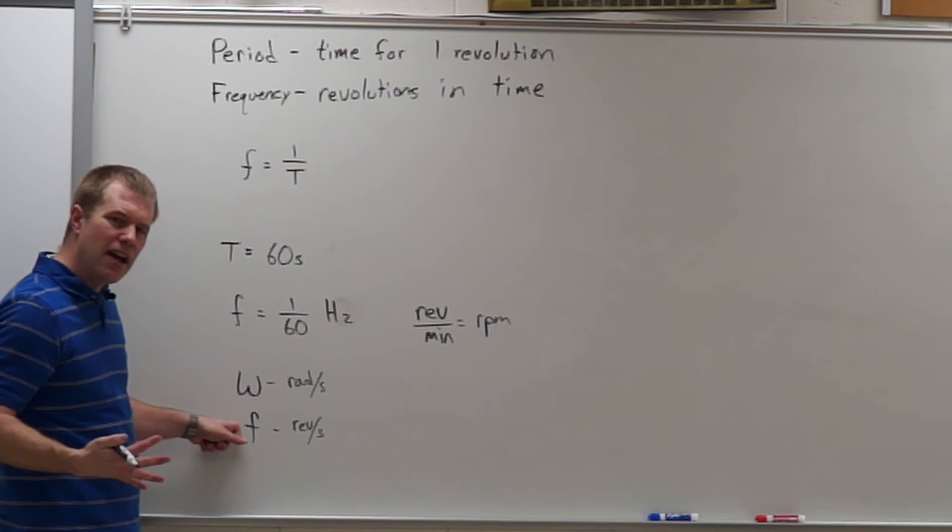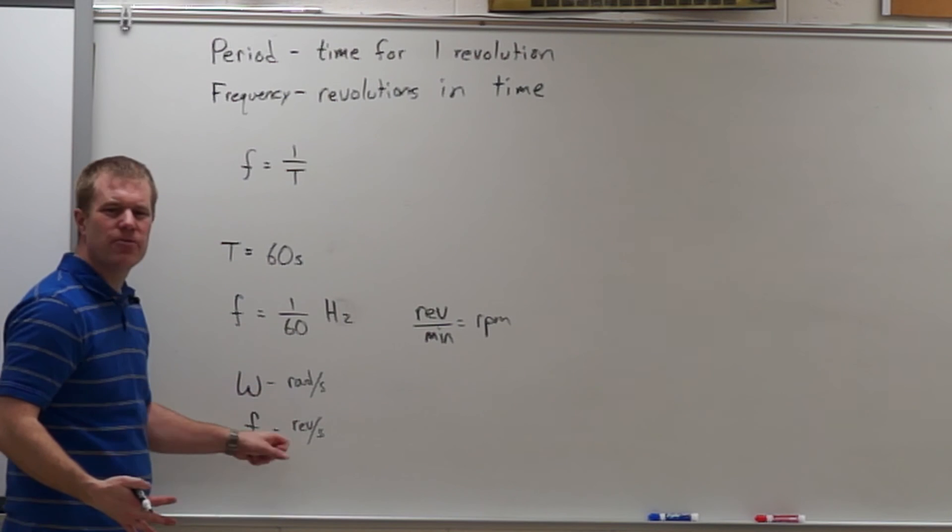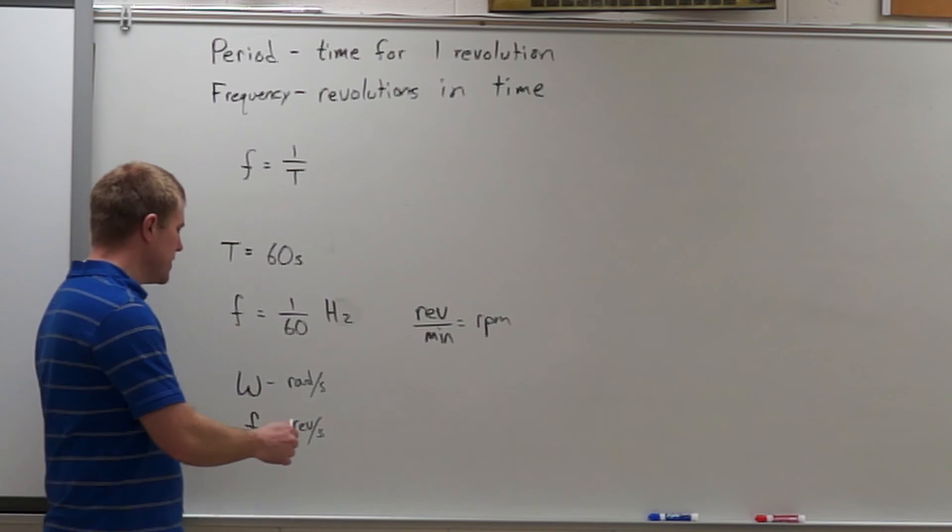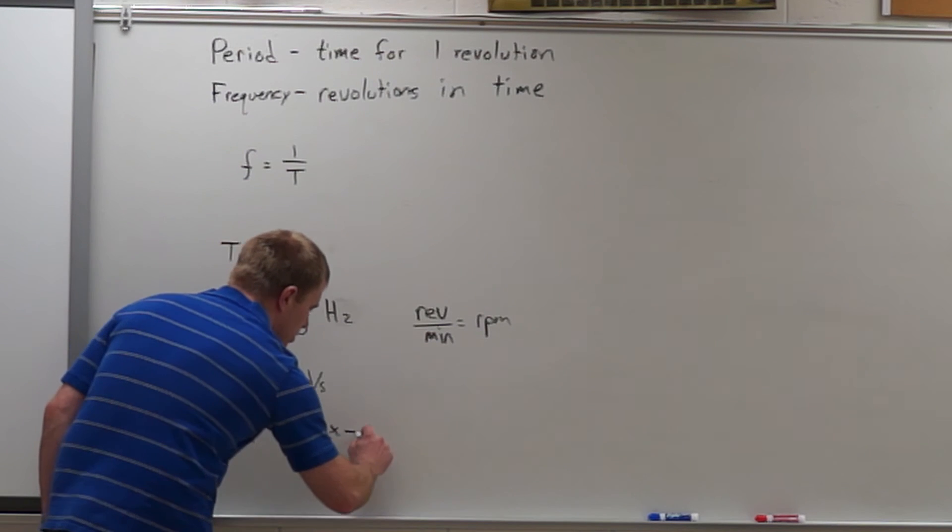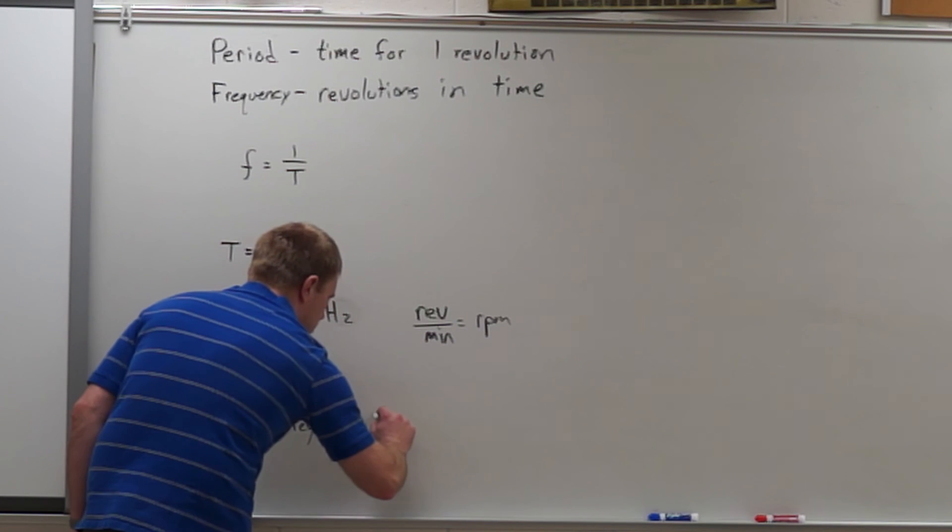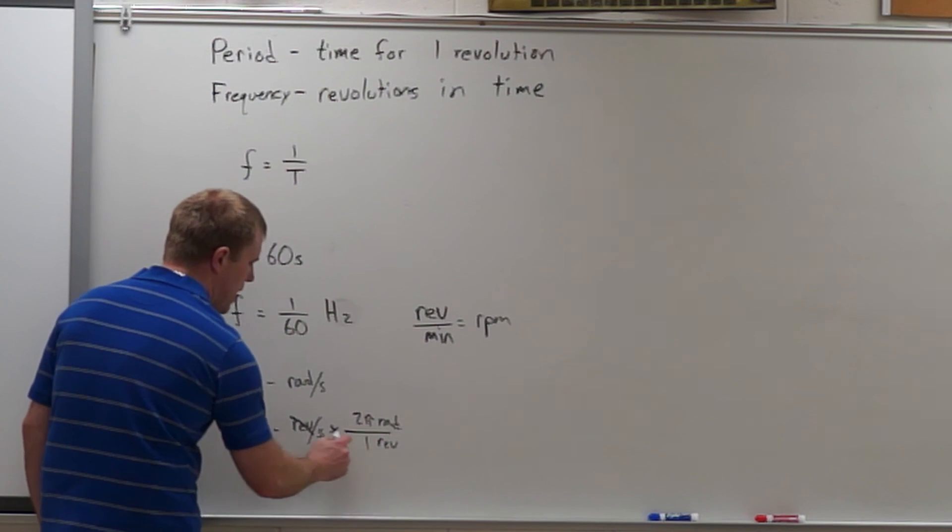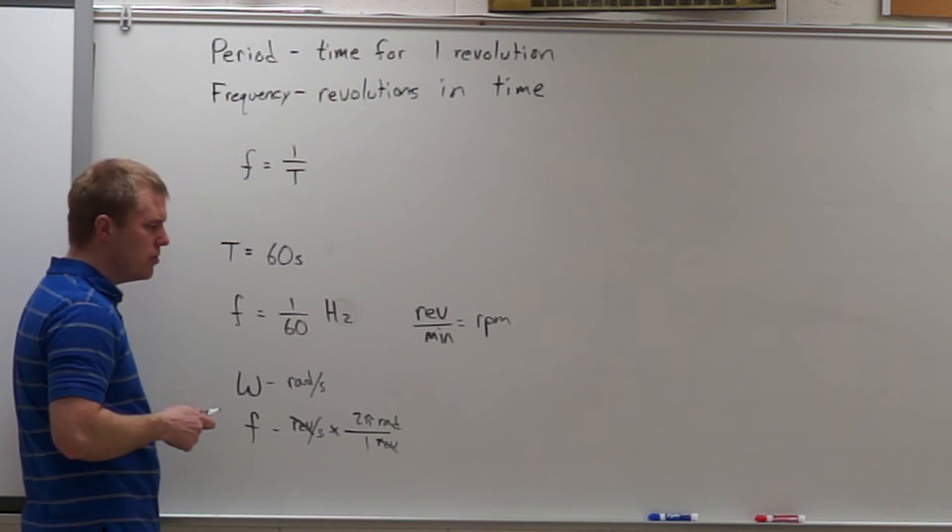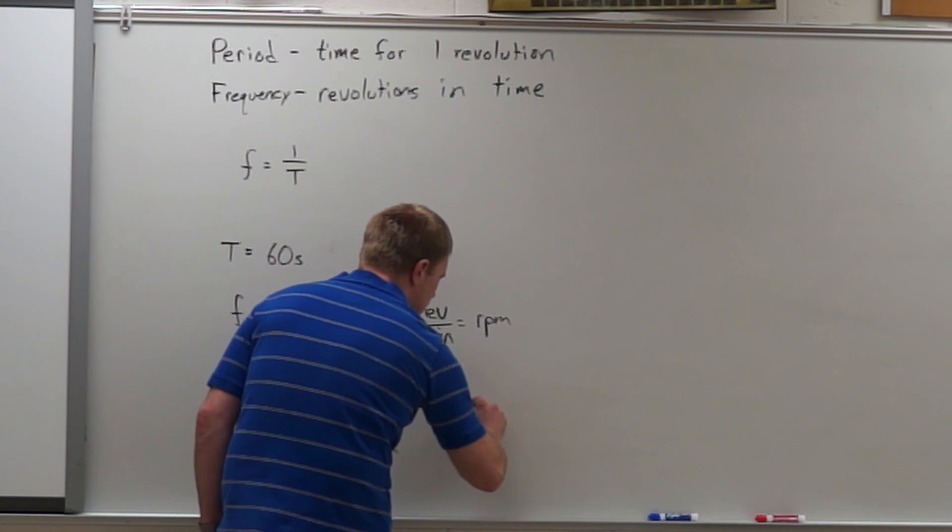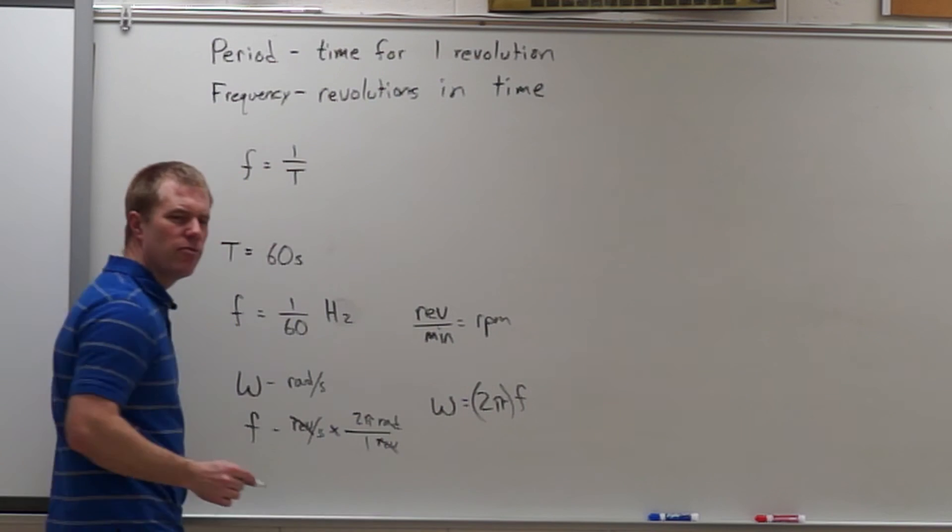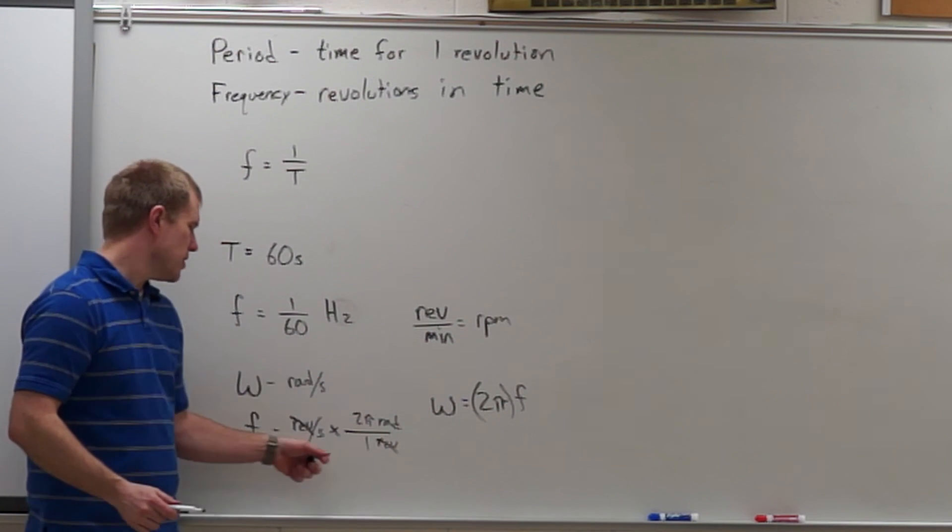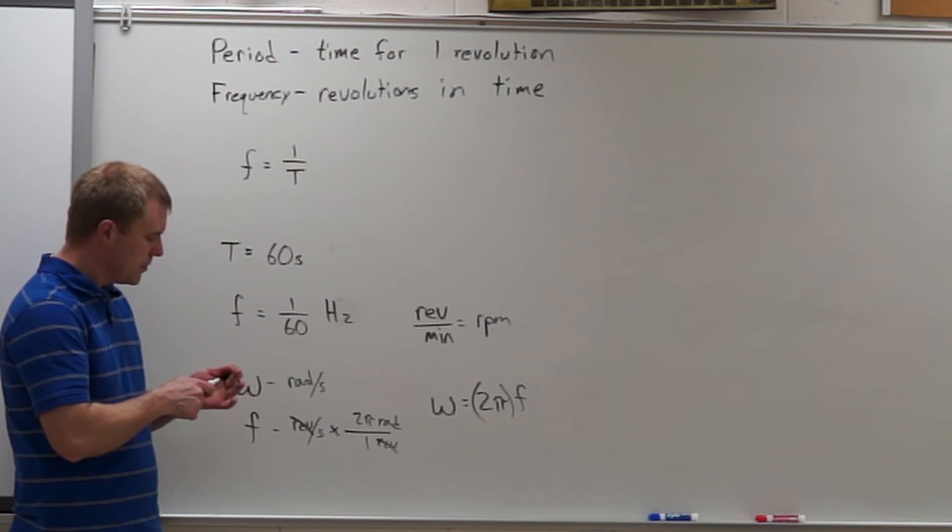These two quantities are really telling me about the same thing with just different units. So we're able to say that if I want to get between the two, to get from revolutions to radians, I've got to get rid of revolutions and go to radians. So I'm going to be multiplying my frequency by 2π to get it to omega. So omega equals 2π times the frequency. And really all we're doing there with that equation is just converting units.